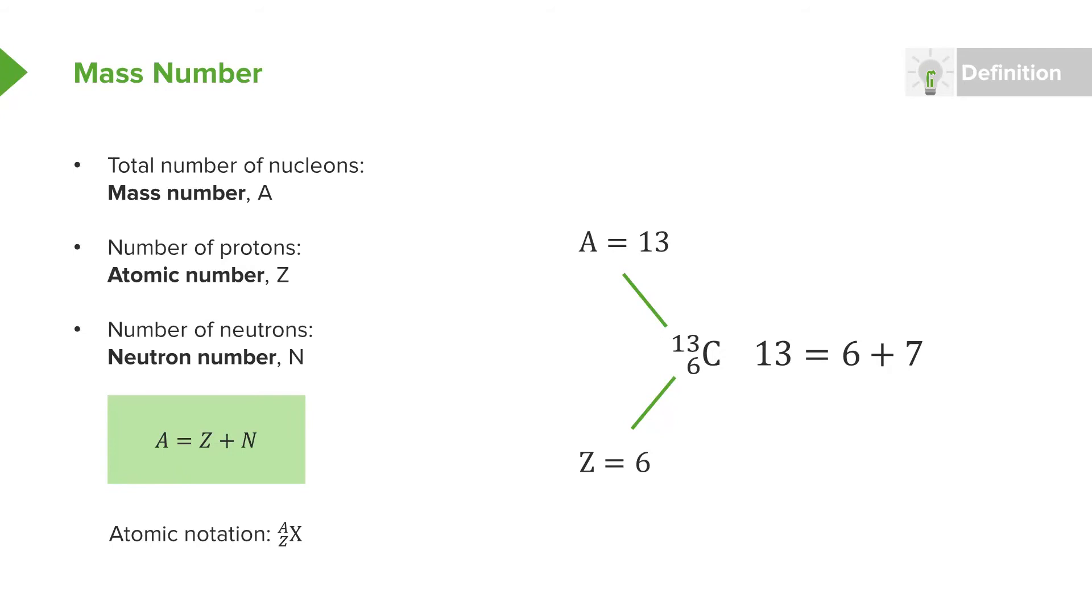The reason we often hear it referred to as just carbon-13 without the six written on the bottom left is because since we know it's carbon, we already know how many protons it must have. And so by saying carbon-13, I already know in my head that it's actually got to have six protons because we called it carbon, and I can figure out how many neutrons are there by myself just using the mass number.